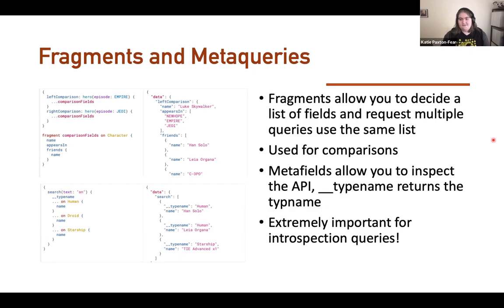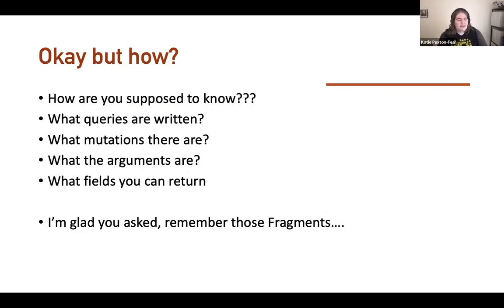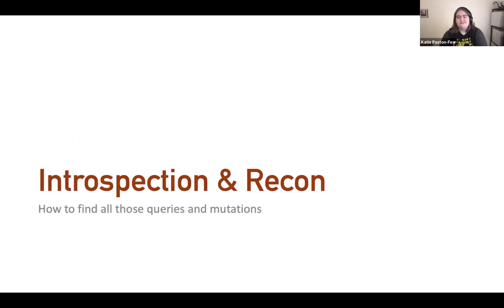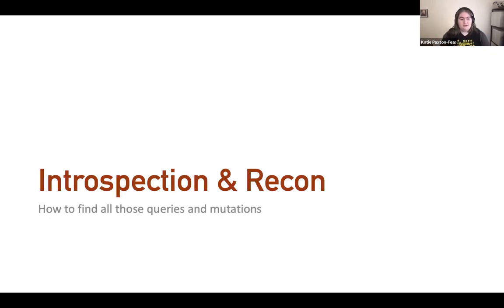How are you supposed to know what queries, mutations, arguments, and fields you can return? I'm glad you asked. Introspection is unique to GraphQL — you might guess by the name. Introspection means to look at the GraphQL API itself and know something about it. It tells you how to find all those queries and mutations. Just let the API tell you what they are.